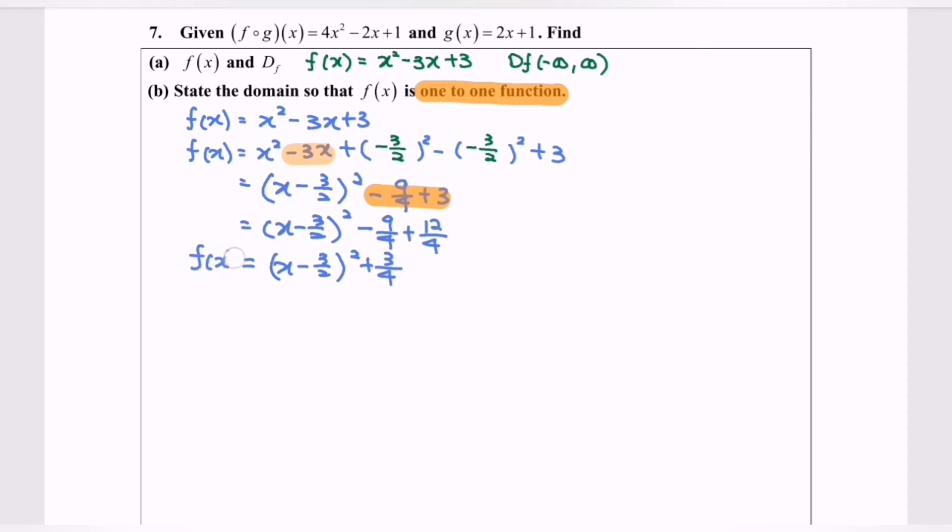That is the standard form for f(x). So now it is time to determine the minimum point. The minimum point would be x minus 3 over 2 equals to 0, so x will become 3 over 2.